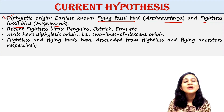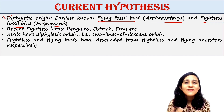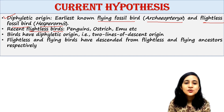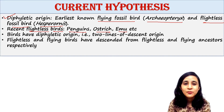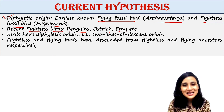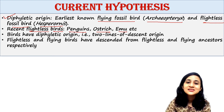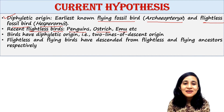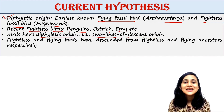Both flightless and flying birds were present at the earliest time. Recently also, we can see both flying and flightless birds. Flying birds we have all seen, and flightless birds include penguin, ostrich, and emu — birds which cannot fly. Therefore, it is believed by some authors that birds have diphyletic origin, meaning two lines of descent.